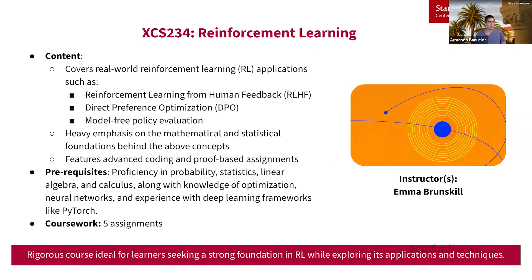Next we have XCS 234, Reinforcement Learning. This is a rigorous course for learners who want a strong understanding of RL while also exploring its applications and techniques. It covers real-world RL applications such as RLHF — a big topic in LLM tuning today — direct preference optimization, and model-free policy evaluation. There's a heavy emphasis on both math and statistical foundations, making it proof-heavy and coding-heavy. Prerequisites include proficiency in probability/stats, linear algebra, and calculus, and knowledge of deep learning frameworks like PyTorch is crucial for success. There are a total of five assignments.